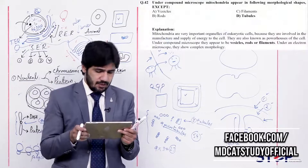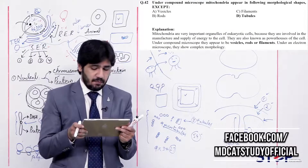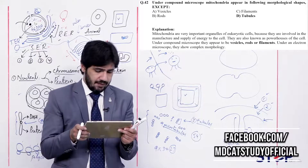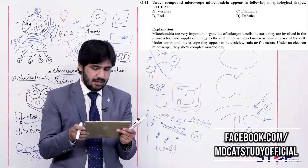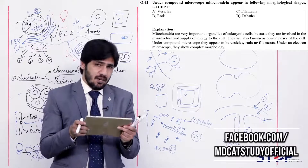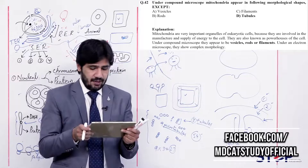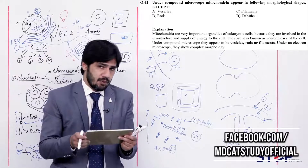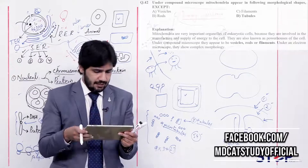Question 42: Under compound microscope, mitochondria appear in the following morphological shapes except — (alpha) vesicles, (beta) rods, (charlie) filaments, (delta) tubules. Mitochondria appear as vesicles, rods, and filamentous forms, but they do not appear as tubules since they are not hollow. So the right answer is delta — tubules.